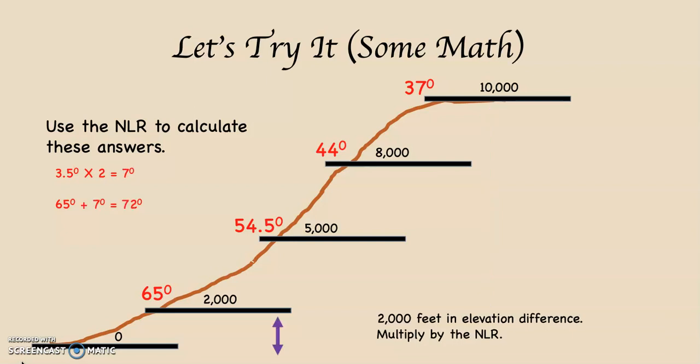Now we need to find the temperature at sea level. We're at 2,000 feet with an air temperature of 65 degrees, going down to sea level — a difference of 2,000 feet. We take 3.5 times 2, which equals 7 degrees. But remember, we're going down, which means air temperature will be going up. So it's 65 plus 7, which equals 72 degrees at sea level.